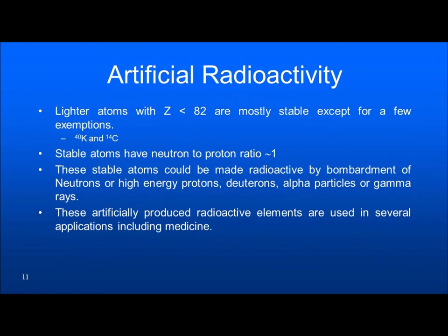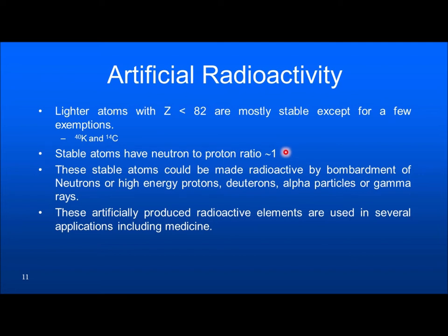The next is artificial radioactivity. Elements having atomic number less than 82 are mostly stable, except for some exceptions like K-40. We also have K-40 in the human body, which is radioactive despite having atomic number less than 82. Stable atoms have a neutron-to-proton ratio almost closer to one — varying somewhere between 1.1 to 1.5 for stability. If by some means you disturb this ratio, you can make the atom an unstable, radioactive atom.